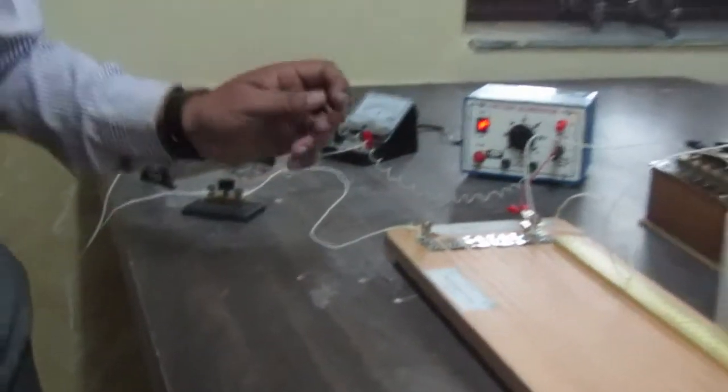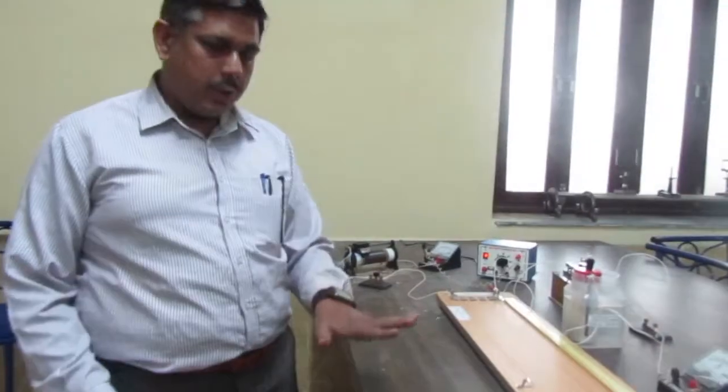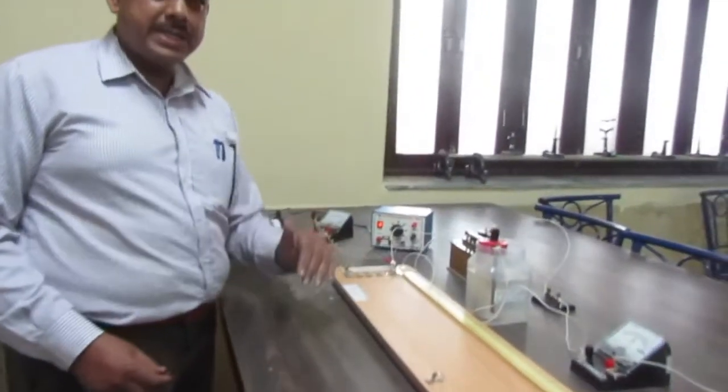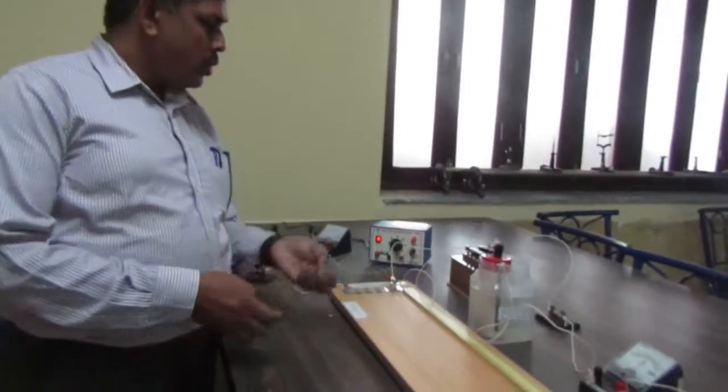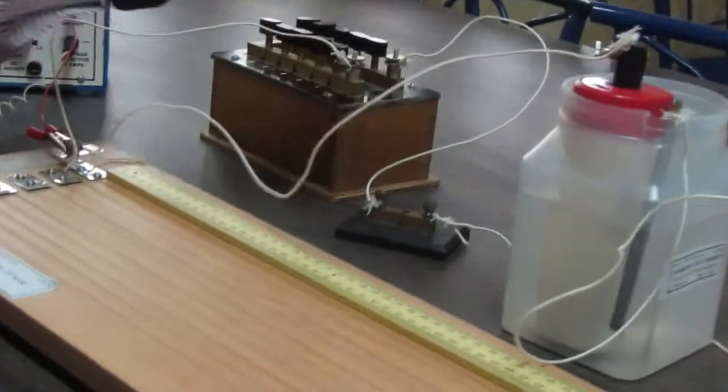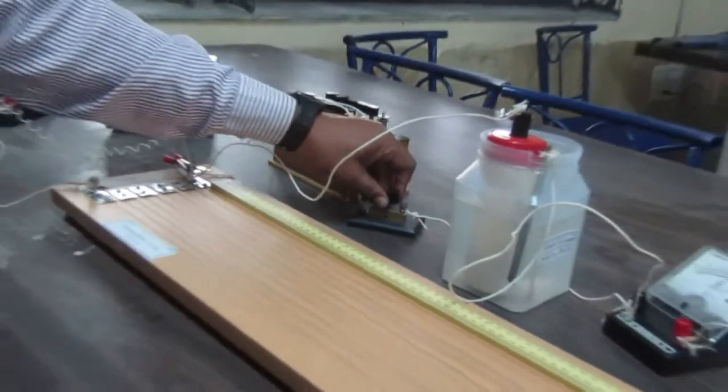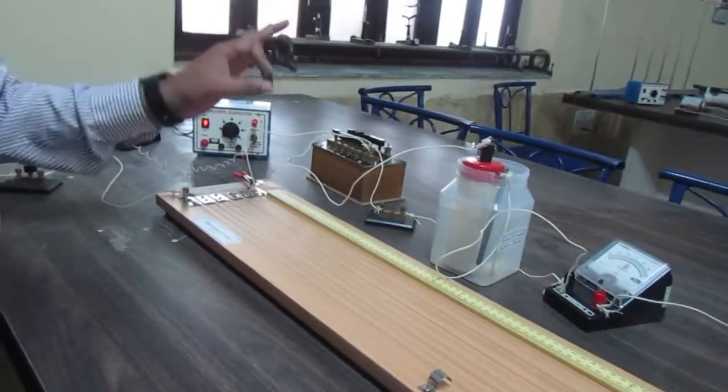Now you have two readings - one is L1 and second is L2. Let's understand what is L1 and what is L2. If I put this key like this, the circuit is closed. And if I put this key like this, the circuit is open.